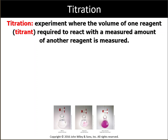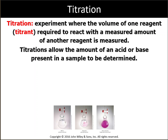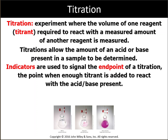In titration, we're going to monitor the pH change in our solutions. To do that, we use indicators. Indicators are substances that do not participate in the neutralization reaction. However, they are sensitive to pH — they change color at different pH values: acidic, basic, or neutral.